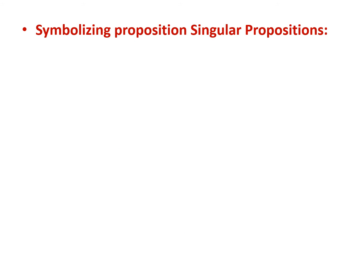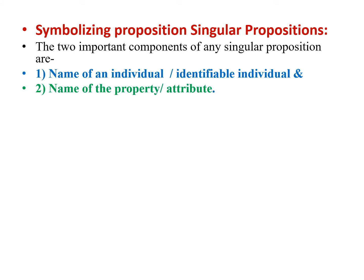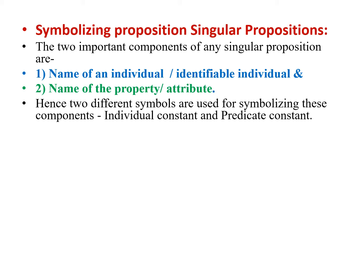We will understand how to symbolize propositions in predicate logic. In singular propositions, two important components are the name of the individual — that is, the specific individual which can be identified by the words 'this' or 'that' — and second is the name of the property or attribute. Hence two different symbols are used: individual constant and predicate constant.